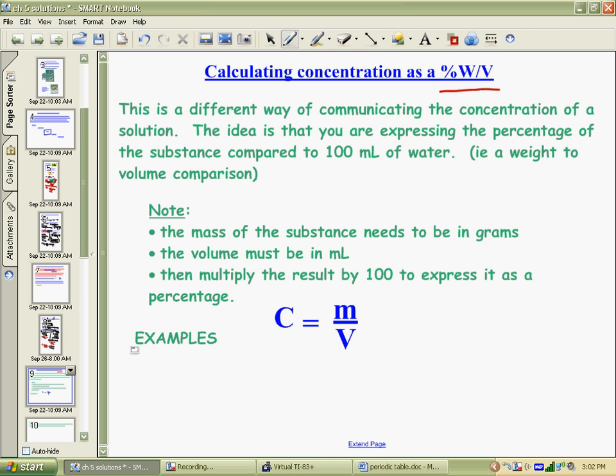It's a different way of communicating concentrations of solutions, and the idea comes from a percentage of how many grams of solute that you dissolve per hundred mils of water. So a 4.5 percent WV solution means that I've taken 4.5 grams and put it into 100 mils of water. That's roughly what we would be looking at.